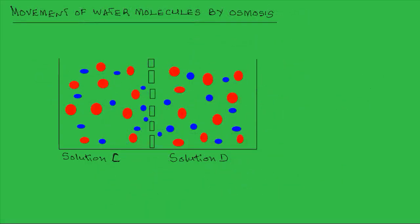Let us look at what happens when two solutions of the same solute concentration are separated by a semi-permeable membrane. If you look at solution C, it has the same number of solute molecules as water molecules, so this makes the solution a 50% sucrose solution.